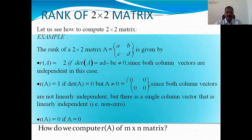Suppose A is a 2 by 2 matrix. To start with, we consider a square matrix. If the determinant of A is not equal to 0, then rank of A equals 2, meaning there will be two linearly independent vectors. If the determinant is 0 but there is one non-zero element in A, then rank of A equals 1, meaning there is one linearly independent vector. If A is a zero matrix, then the rank of A will be 0.